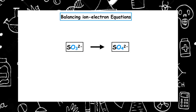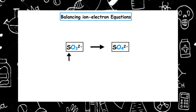Let's balance the equation of SO3²⁻ changing to SO4²⁻. The first thing we have to do is balance all elements that are not oxygen or hydrogen, so we're looking at the sulphurs. We've got one sulphur on the reactant side of the SO3, and one sulphur on the product side, so those are balanced.